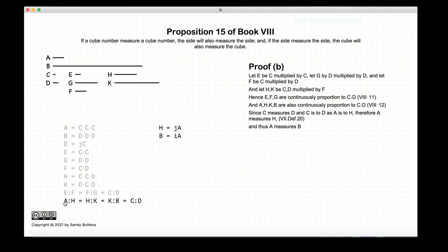And since a measures h, we know that a also measures b according to one of the earlier propositions of this book. So we have that a measures b.